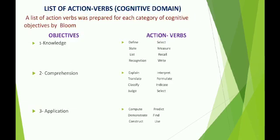List of action verbs: Bloom suggested a list of action verbs for each category of cognitive objectives, and while writing objectives under different categories, a teacher can use these action verbs. For knowledge, the action verbs that can be used are: the child will be able to define, state, list, recognize, select, measure, recall or write.